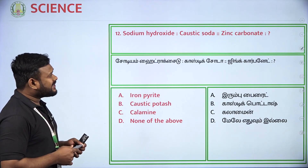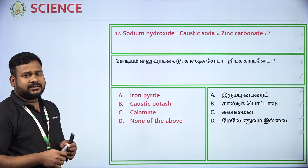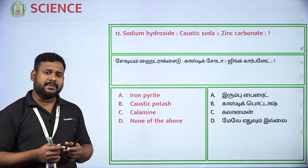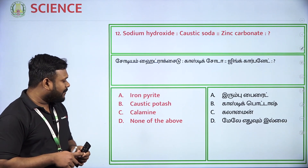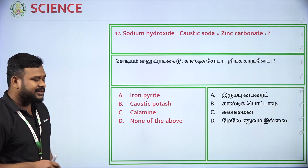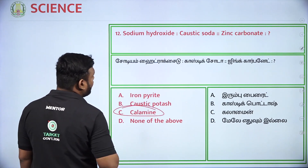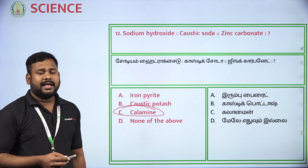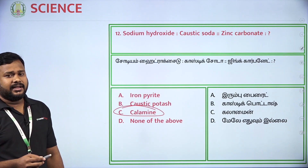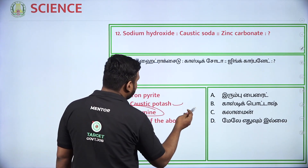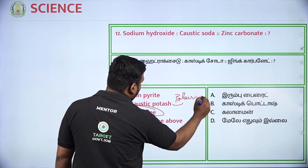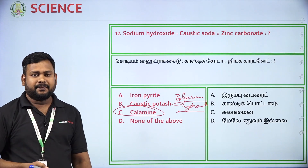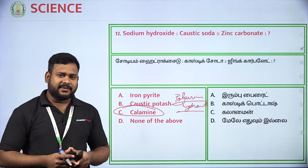Next question on chemical names and common names: Sodium Hydroxide is caustic soda, Zinc Carbonate is Calamine. So in the 12th question, option C — Calamine — is the common name for Zinc Carbonate. Also, Potassium Hydroxide is known as Caustic Potash.